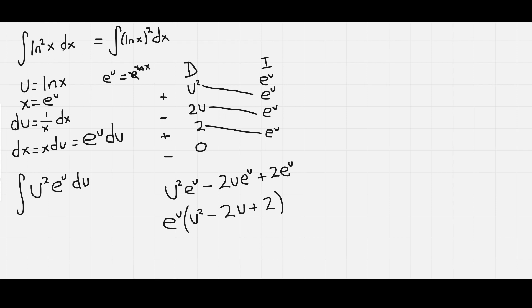But we're still in terms of u, and the question was in terms of x, so we need to put it back into terms of x. So e to the u, as you can see here, is just x. u squared, well u is ln x, so that's going to be ln squared x.